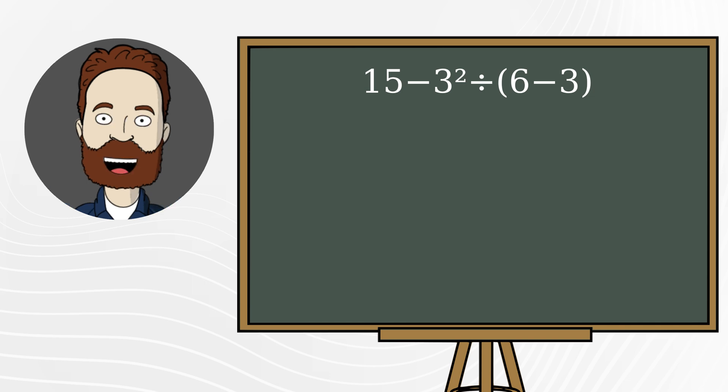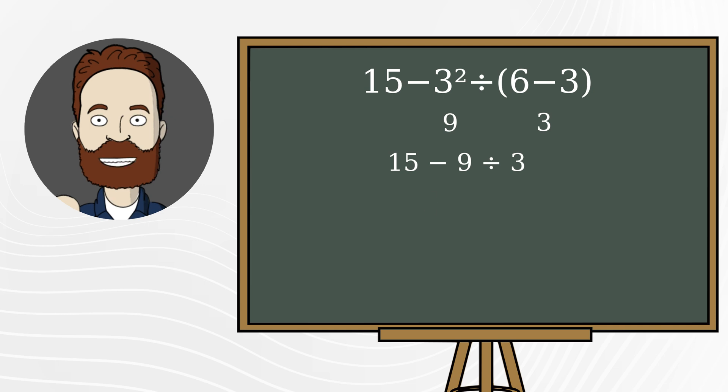Here's how it's often solved. First, they perform the operation in the parentheses. 6 minus 3 is 3. Then exponentiation. 3 squared is 9. Substitute the result. Then subtract. 15 minus 9 is 6. And divide. 6 divided by 3 is 2.